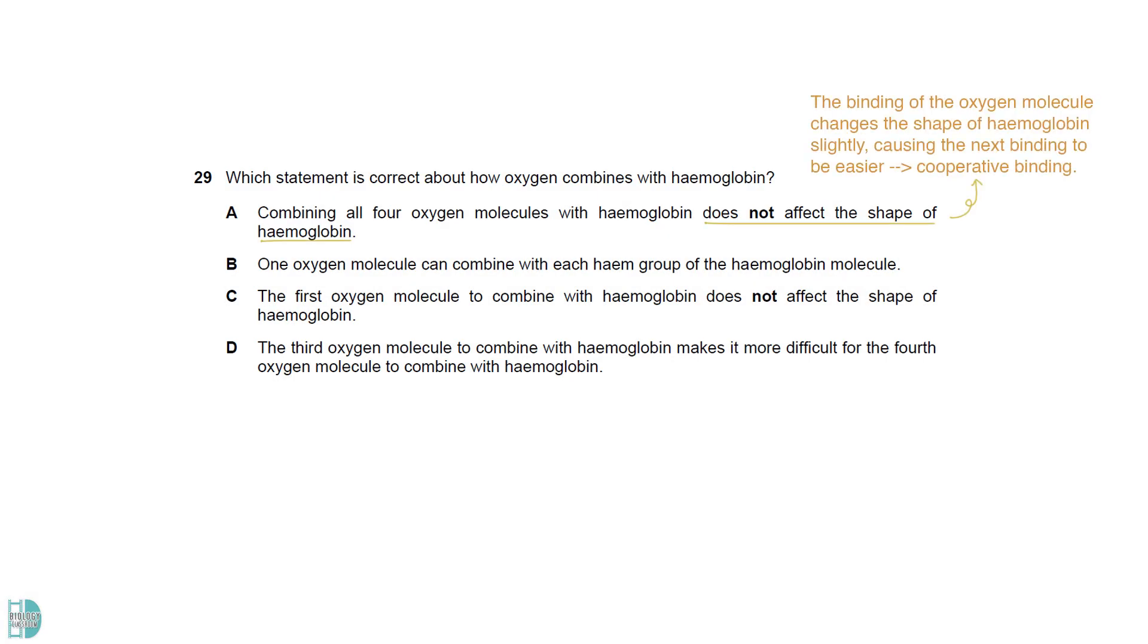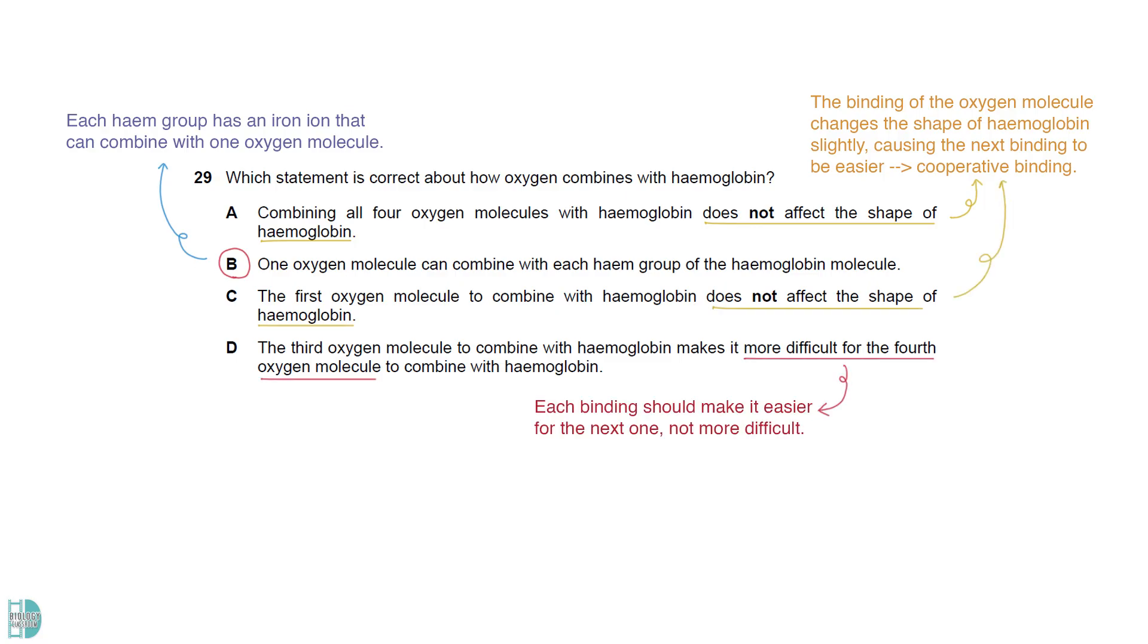A is incorrect because the binding of the oxygen molecule changes the shape of hemoglobin slightly, causing the next binding to be easier. This is called the cooperative binding. B is correct. Each heme group has an iron ion that can combine with one oxygen molecule. C is wrong for the same reason as A. D is not true because each binding should make it easier for the next one, not more difficult.